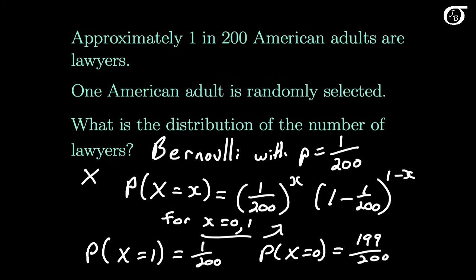Now you might be wondering, what is the point of all of this? We had that approximately 1 in 200 American adults are lawyers, so it's certainly not rocket science to say the probability that we get one lawyer is 1 in 200. But saying that something has a Bernoulli distribution is a nice concise description of the situation at hand.